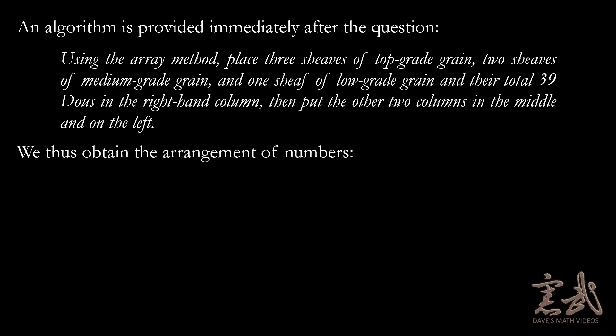This gives us an arrangement of numbers that would have looked something like this. So as we can see here, in the right-hand column we have the numbers three, two, one, and thirty-nine. In the middle column, we have the numbers two, three, one, and thirty-four. And in the leftmost column, we have the numbers one, two, three, and twenty-six.